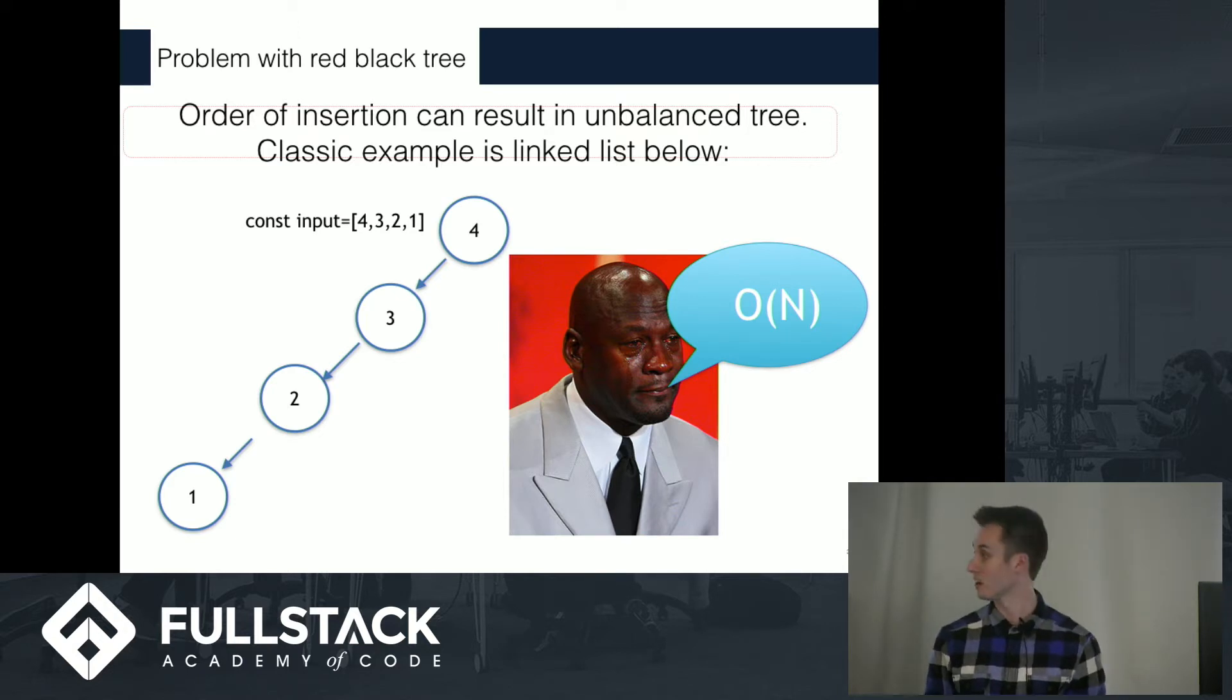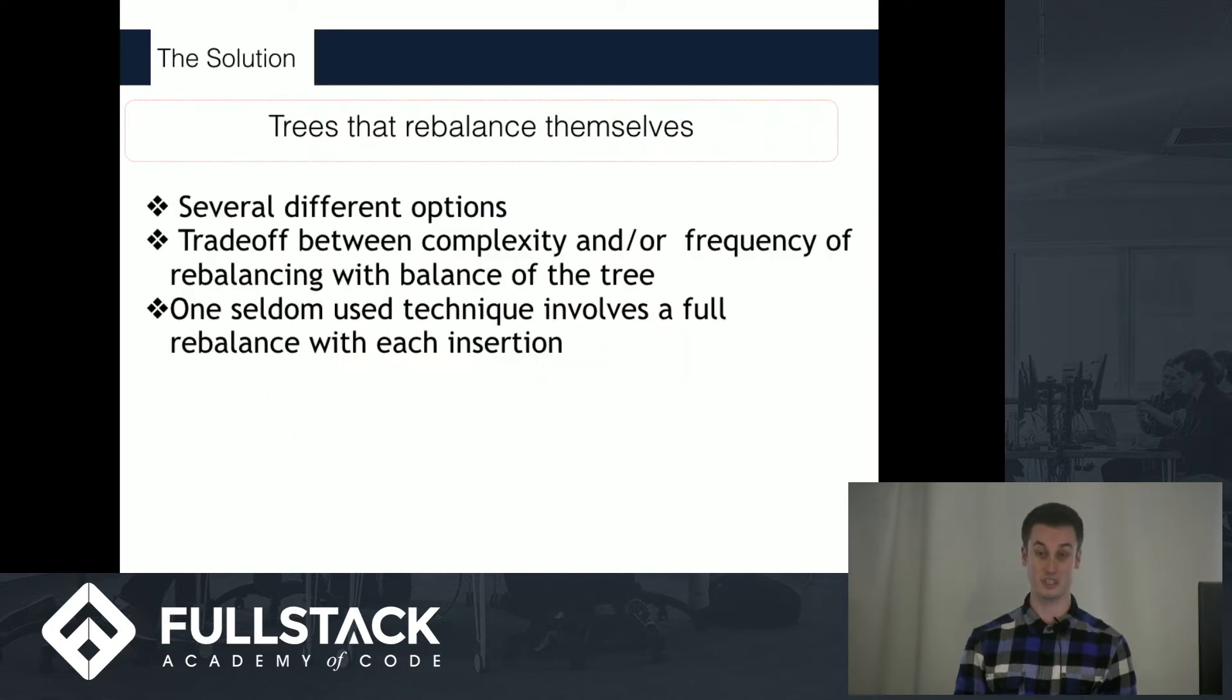As you can see, on one branch of the tree, we're not really ruling out any nodes, so it doesn't really have any benefit, and this brings us to the solution, which is trees that balance themselves.